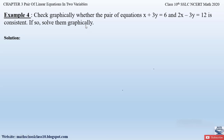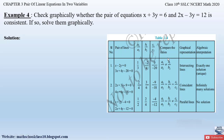What does the word 'consistent' mean? If you have watched my previous video — the introduction part — I have explained this in detail. The general form of a pair of linear equations is given by a₁x + b₁y + c₁ = 0 and a₂x + b₂y + c₂ = 0.